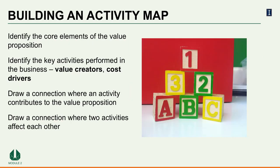So how can we build an activity map? We start with what should make a firm different from any other competitor in the market — its value proposition. The value proposition refers to the offering from an organization that helps a potential customer get a job done more conveniently, effectively, and/or more affordably. What would make a customer buy and continue to use your product and/or service?